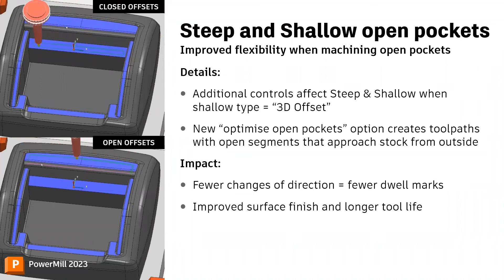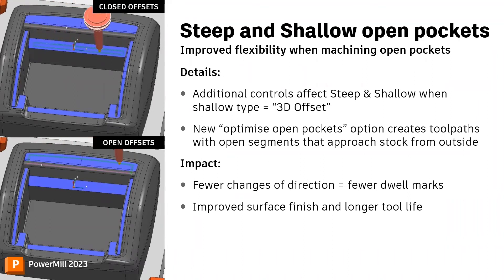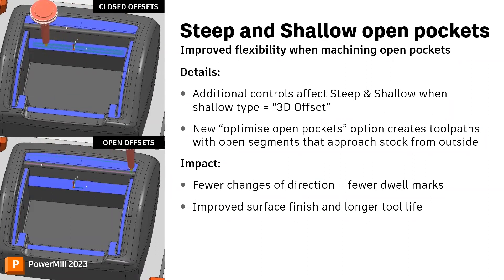The benefits of open offsets are numerous: fewer changes of direction, reducing the likelihood of witness marks on the machined part; and the offsets allow the cutting tool to approach the pocket from the outside, reducing tool wear and prolonging cutter life.